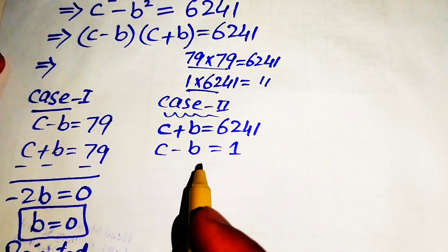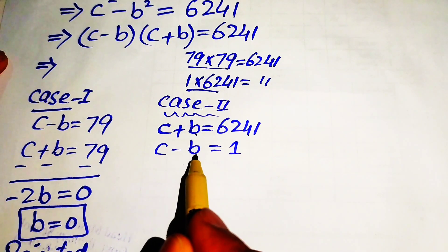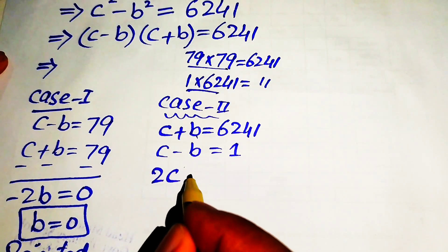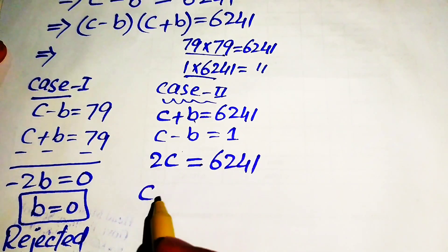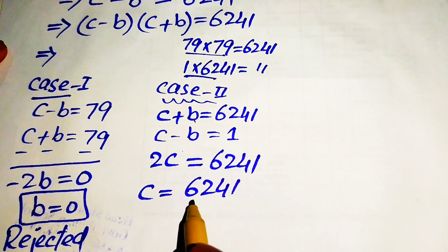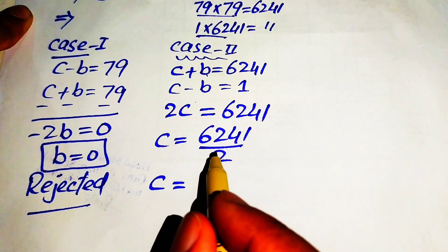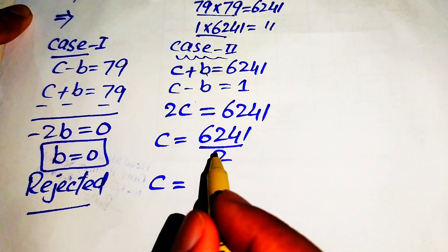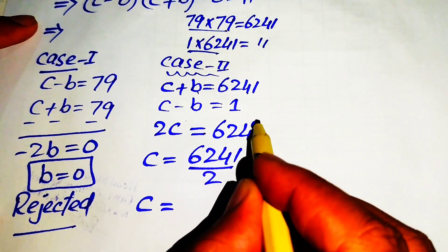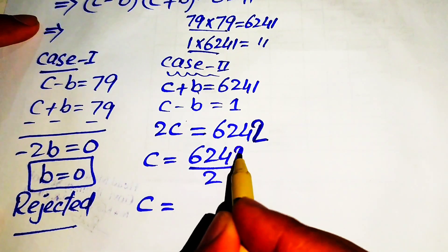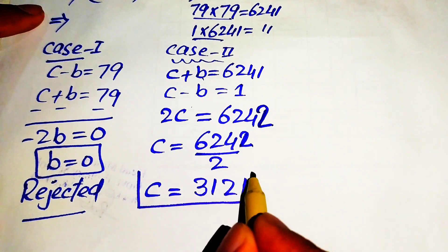In Case 2, we compare with 1 × 6241, giving c + b = 6241 and c − b = 1. Adding these two equations, the b terms cancel and we get 2c = 6242, so c = 6242 ÷ 2 = 3121. This is the value of c.